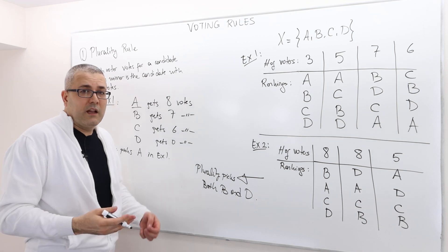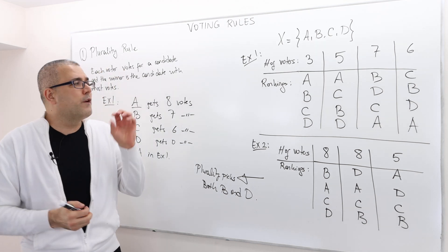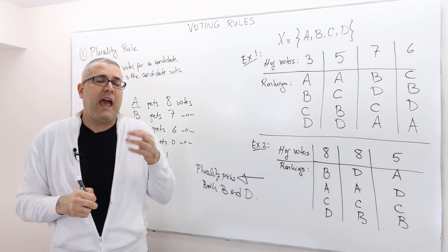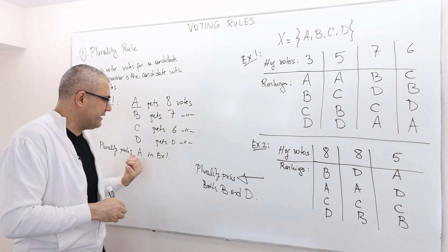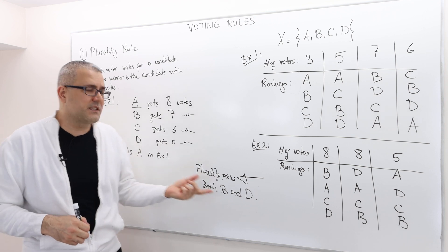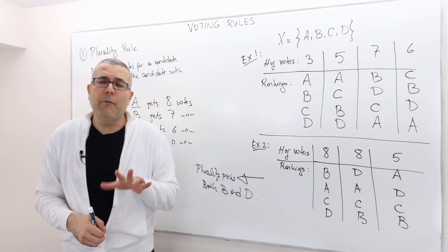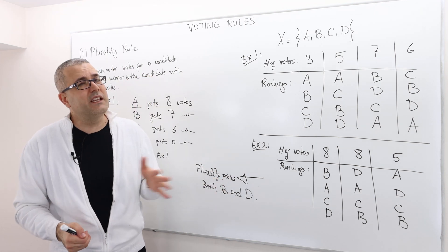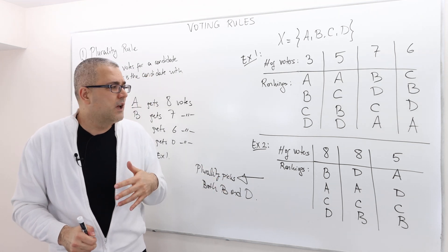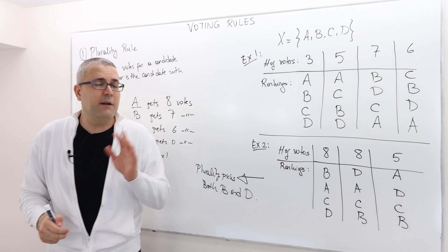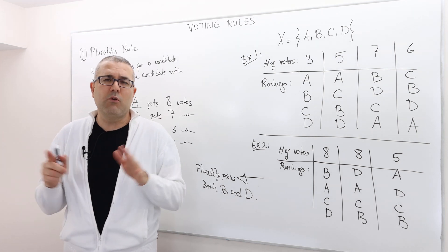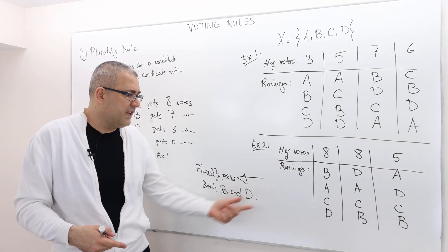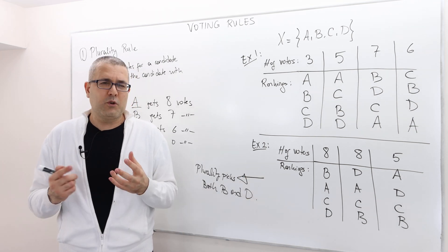So, basically, remember, voting rule determines winners, and sometimes it's a unique candidate, as in the first example, but sometimes it's not unique, as in this example. Obviously, in reality, when this happens, I mean, this doesn't really happen so often, because the number of voters is so large, so that the likelihood of tie, something like this, is almost zero.